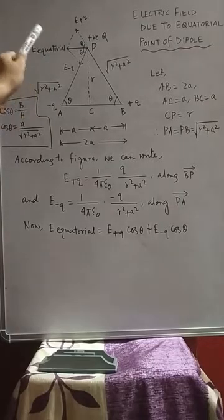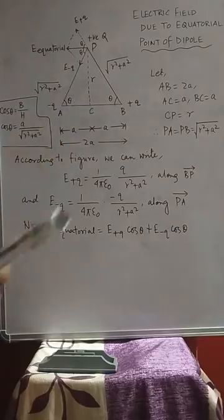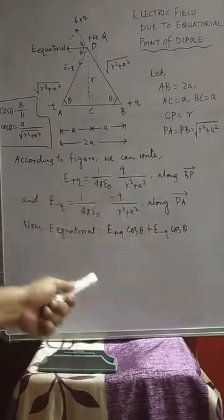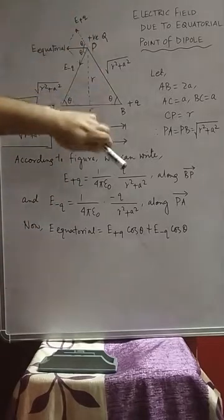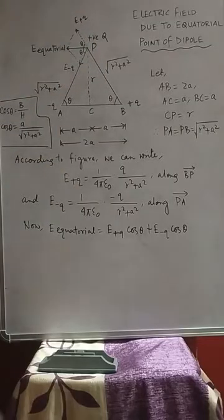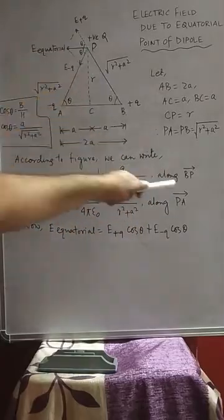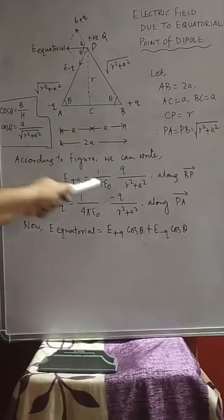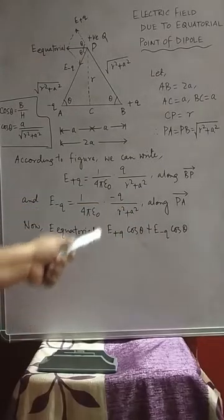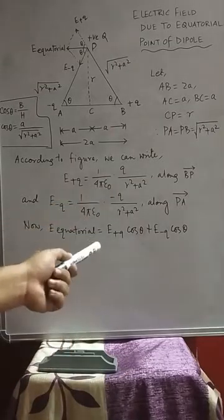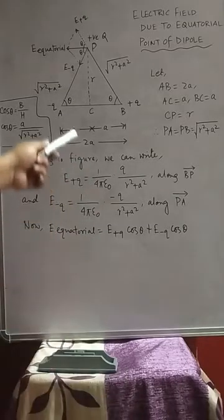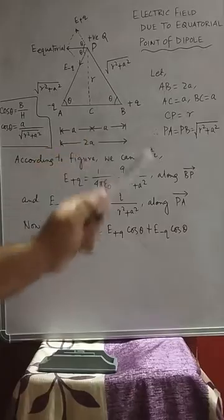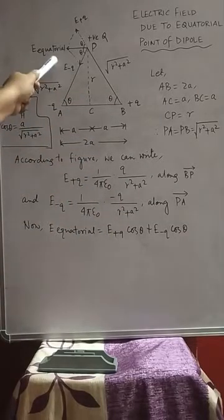We have to calculate the expression of the electric field at this equatorial point due to the dipole. According to the figure, E+q = (1/4πε₀) · q/(r² + a²), directed along B to P. E-q is directed along P to A. Since one plus charge and one minus charge are equal in magnitude, the magnitudes of E+q and E-q are both simply q/(r² + a²) scaled by the Coulomb constant.